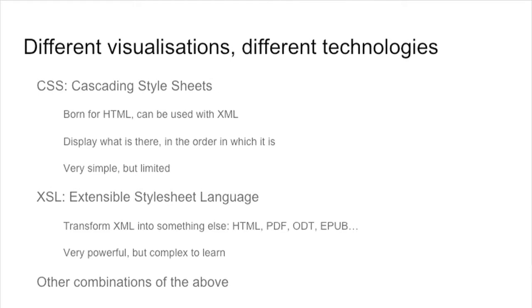There are different types of visualizations you can apply on top of an XML file. The first is called CSS, Cascading Style Sheet. It is very powerful but limited at the same time. It's the one used for most of the web pages you see on the Internet, but it can be applied also on XML.